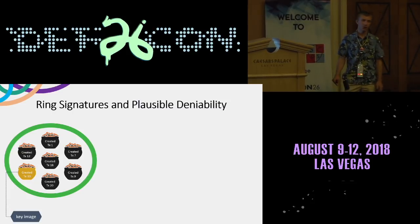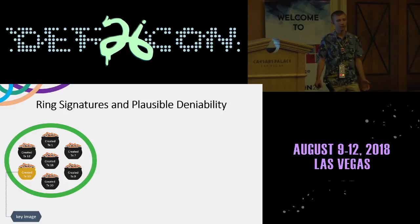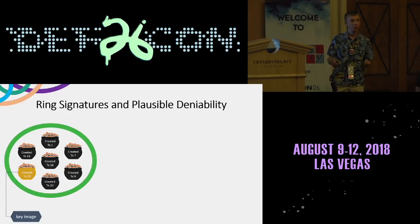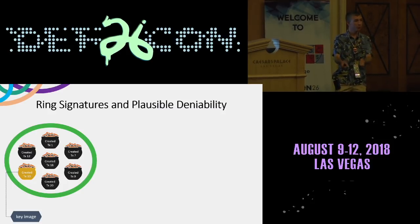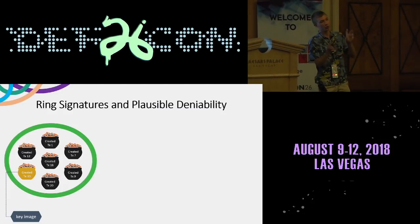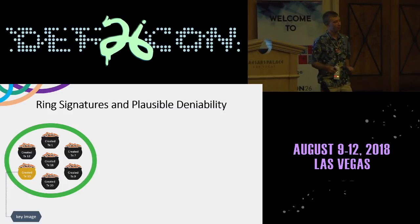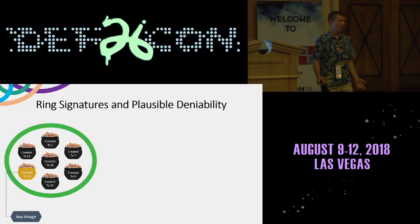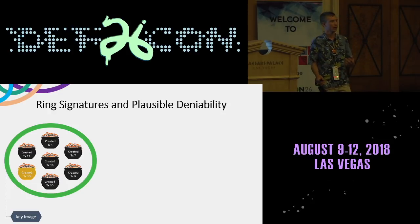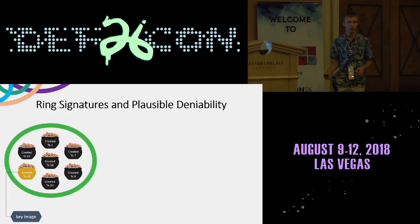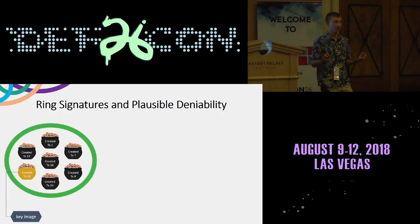Ring signatures are one of the four primary components of privacy that Monero offers. They are used to obfuscate the sender in a transaction — more accurately, which output is used. It makes it seem as if several outputs are each independently being spent, so you don't know which source of funds is actually being used. It's important to understand outputs: they are like single-use pots of gold.